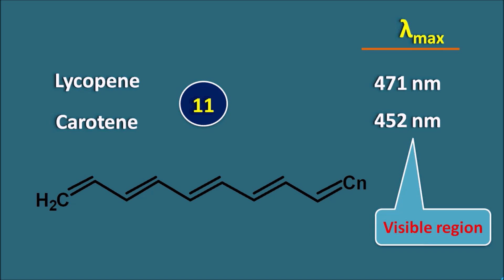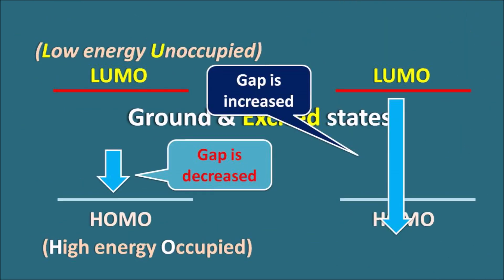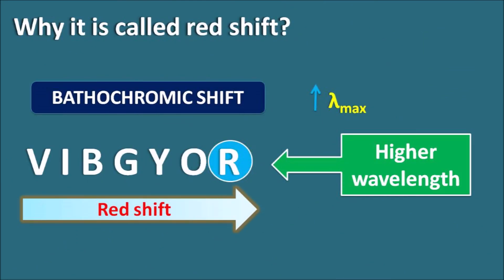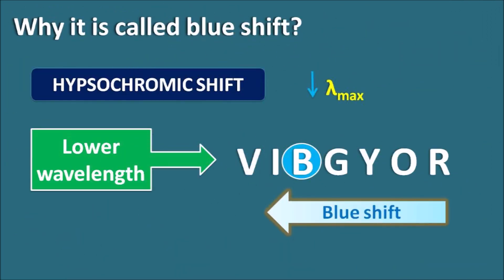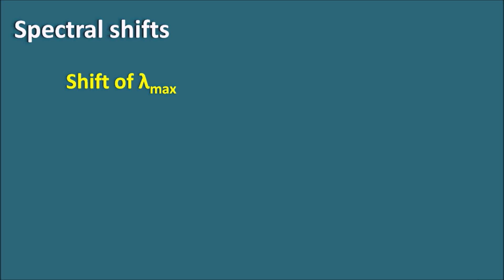In this video we will see what spectral shifts are, what happens to the lambda max value, how it either increases or decreases, and what factors are responsible for these spectral shifts. Spectral shifts are the shift of lambda max — this shift may be either to higher values or to lower values, so lambda max may either increase or decrease.